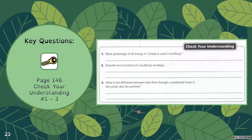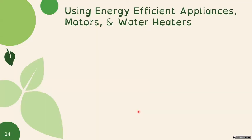Now you can do the key questions on page 146, check your understanding one through three. That covers designing more efficient buildings.